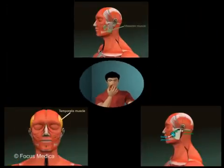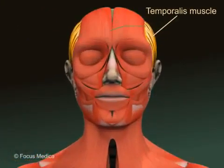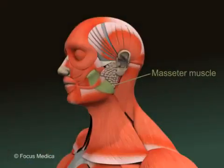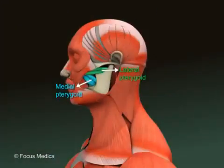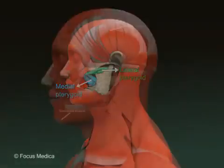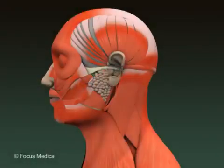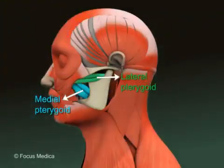Four muscles are dedicated to masticatory functions: temporalis, masseter, medial and lateral pterygoids. These muscles are better seen in the dissection of the infratemporal fossa.